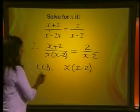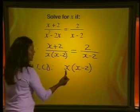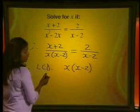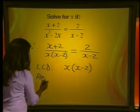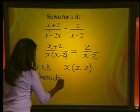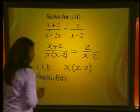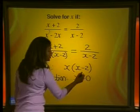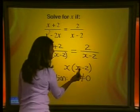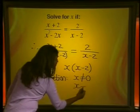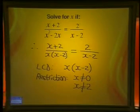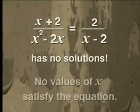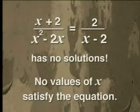Our LCD was x(x - 2). We know that denominators are not allowed to equal 0, so our restrictions are: x ≠ 0, and from x - 2 ≠ 0, we get x ≠ 2. Since our solution x = 2 violates this restriction, there are no solutions — no values of x that satisfy the equation.